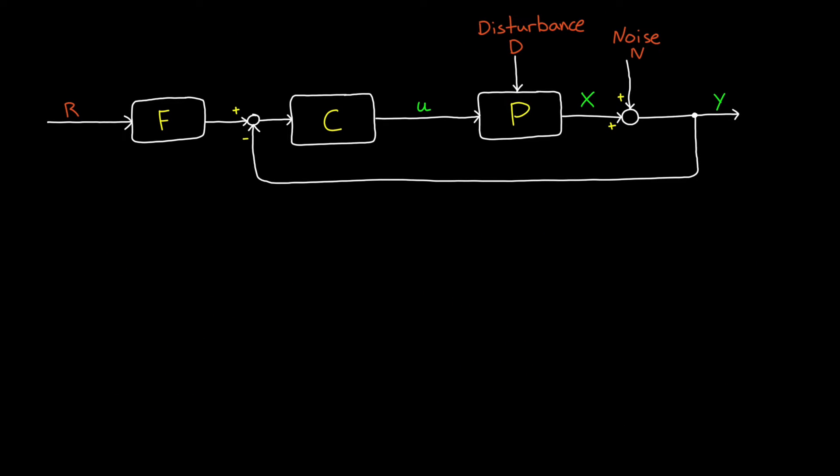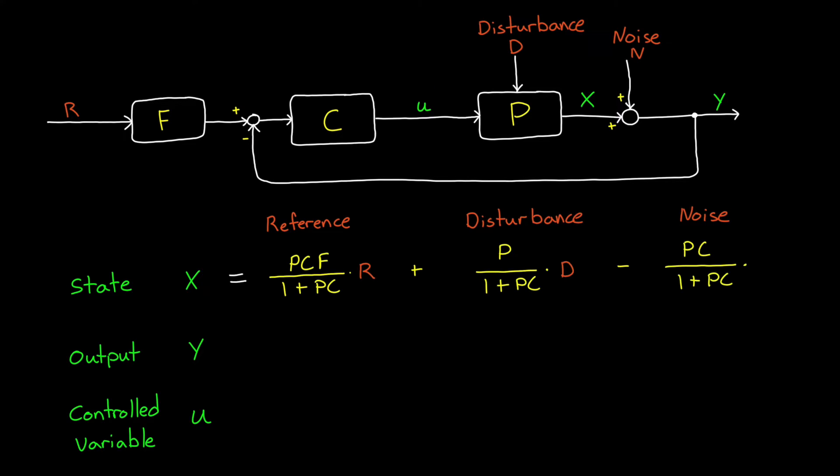For this feedback loop, we have three external signals: the reference, the disturbance, and the noise. And there are three internal signals that we typically care about: the state X, the output Y, and the controlled variable U. So we can determine the transfer functions between each of these inputs and each of these outputs to get the following nine relationships.